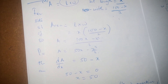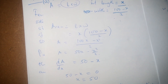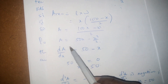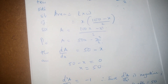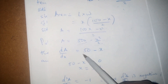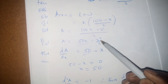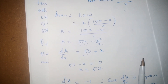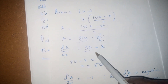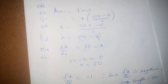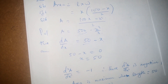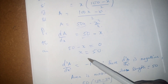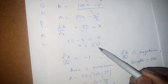To determine the maximum point of our area, we differentiate once. Differentiating 50x − x²/2 gives dA/dx = 50 − x, because differentiating x²/2 gives x. To find the value of x at the maximum, we set this equal to zero: 50 − x = 0, so x = 50.